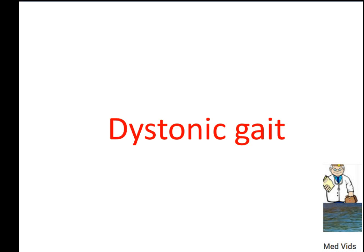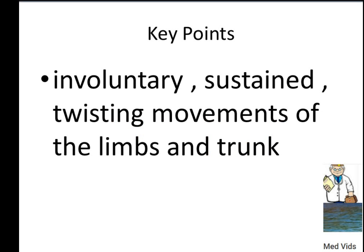Dystonic gait — dystonia means twisting of the muscle. The key feature is involuntary sustained twisting movements of the limbs and trunk.